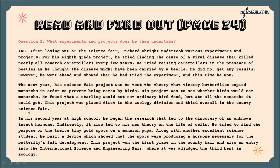In his second year at high school, he began research that led to the discovery of an unknown insect hormone, which also indirectly led to his new theory on the life of cells. He tried to find the purpose of 12 tiny gold spots on a monarch pupa. Along with another science student, he built a device which showed that the spots were producing a hormone necessary for the butterfly's full development. This project won first place at a county fair and an entry into the International Science and Engineering Fair, where it was judged third best in zoology.